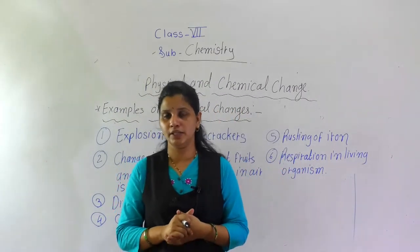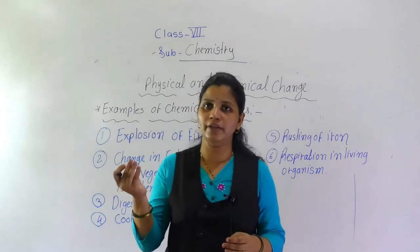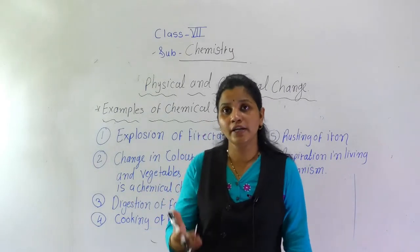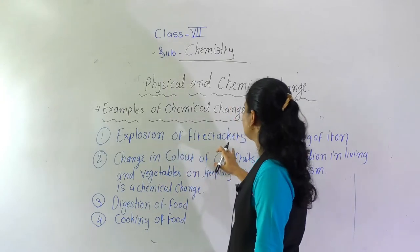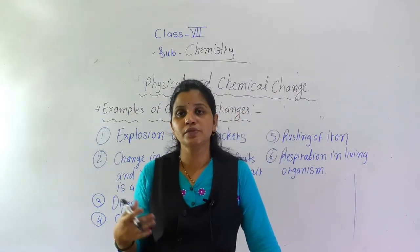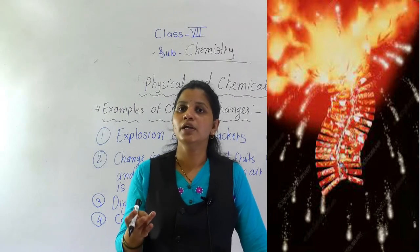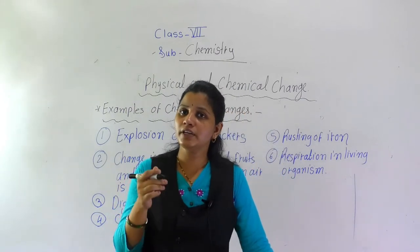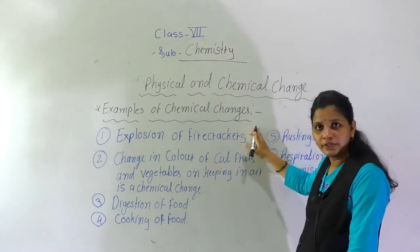Which examples are there in chemical changes? Whenever a chemical reaction occurs, it is a chemical change. The first example is explosion of firecrackers. In that, new substances are formed — for example, light and sound. So whenever new substances are formed, chemical reactions occur, and that is one type of example of chemical change.